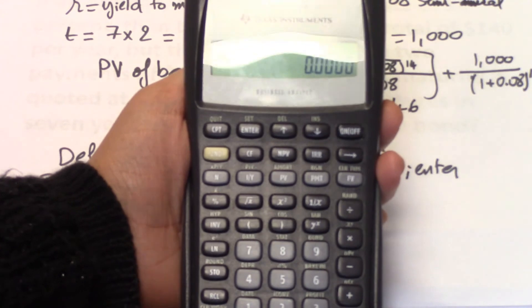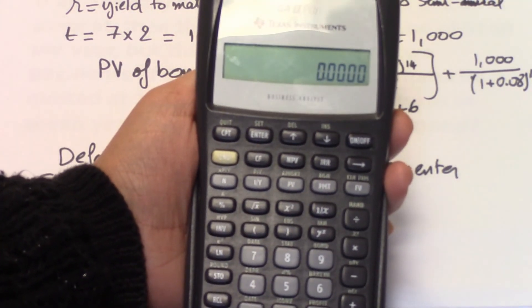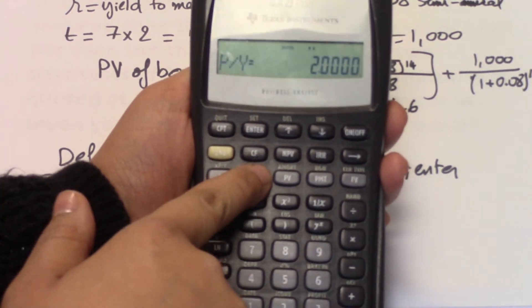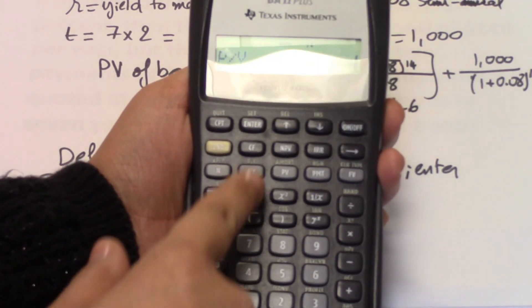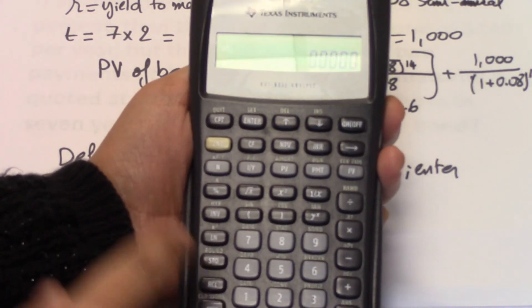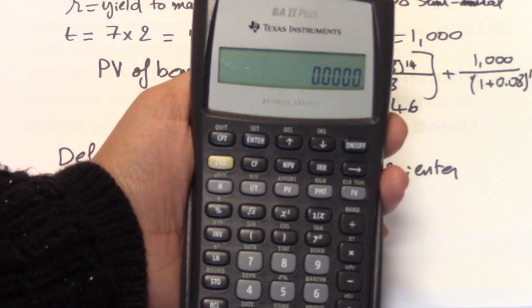To exit, you just do CE/C. And then to go back to the default, what you can do is do second I over Y. Set this to one. And then enter, down arrow, exit. And that means that the calculator is set to the default frequency.